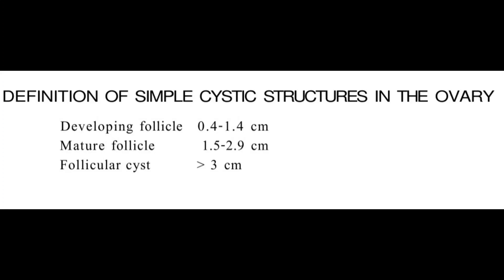Ovaries are reproductive organs whose functions are to develop and mature follicles. Many clinicians get confused with ovarian cysts and cannot comprehend whether they are seeing developing follicles, mature follicles, or follicular cysts. To write an accurate report with accurate wording, this slide will help. A developing follicle has a size ranging from 0.2 to 1.4 centimeters.